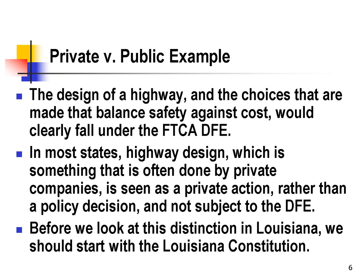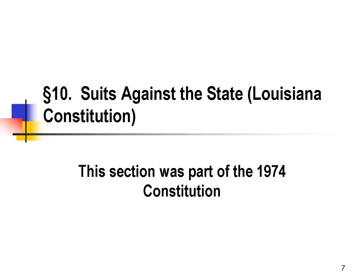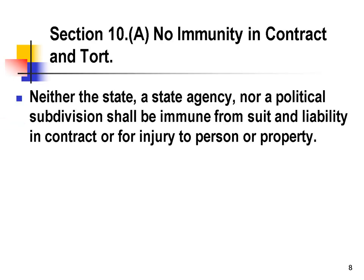Let's look at the Louisiana Constitution, Section 10, Suits Against the State. This is part of the 1974 revision of the Constitution during Governor Edwin Edwards' reign. Section 10A — no immunity in contract and tort — abolishes sovereign immunity for tort and contract actions including injury to property as well as persons. So Louisiana does not have sovereign immunity in its constitution, at least as regards injuries to persons or property and contract claims.